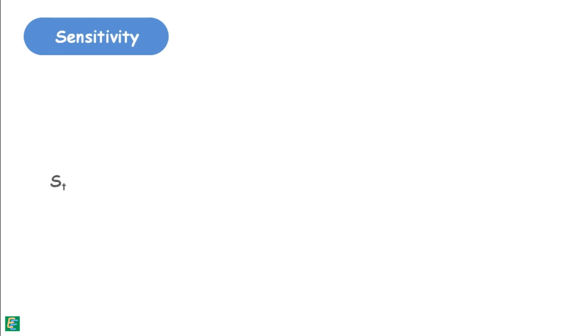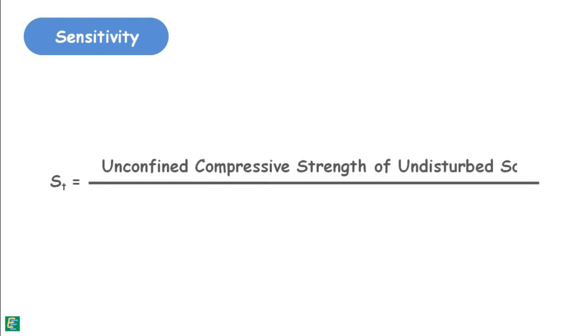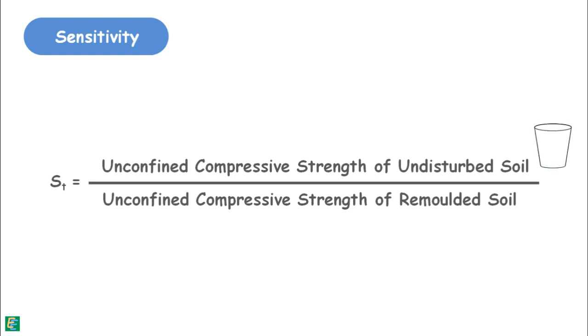Sensitivity is denoted as ST and is defined as the ratio of the unconfined compressive strength of a specimen of undisturbed soil to the unconfined compressive strength of a specimen of the same soil after remolding but possessing the same water content.